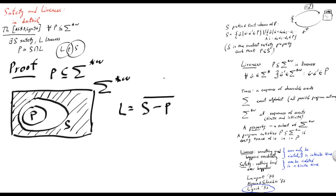This gives us the set: P included. By construction, S is indeed a safety property because it is limit-closed and prefix-closed. So what remains to show is that L is indeed a liveness property — simply because by construction L intersected with S gives us P.